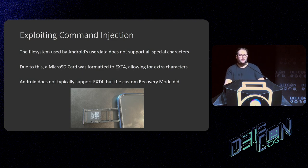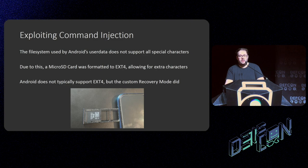Luckily, I found that they had modified the recovery image to also support ext4 filesystems, which is rare on Android — usually when you put in an ext4 SD card it says unsupported filesystem and tries to format it. Luckily for me it didn't do that, so I could just load my more complex update file onto the ext4 card and execute it.